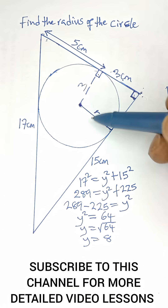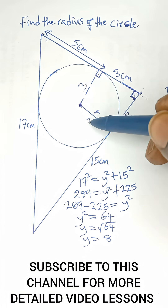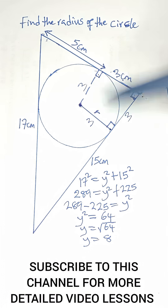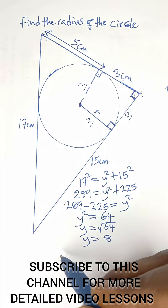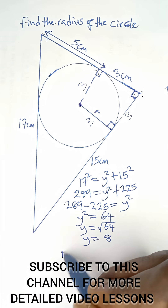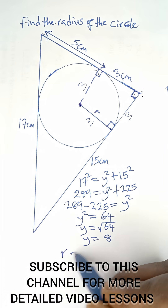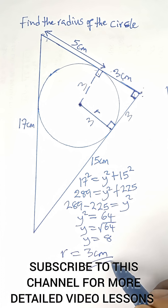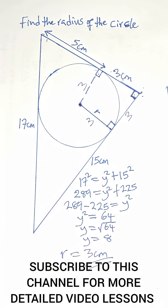Since this side is 3, all sides of the square are 3, and the line from here to here is the radius. So the radius r equals 3 centimeters as the final answer. Please subscribe to this channel for more videos like this — thank you.